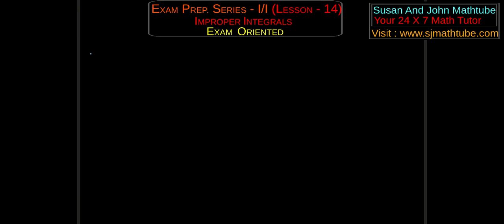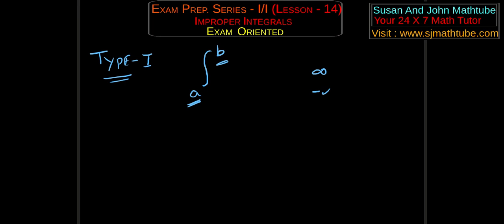Type 1 is something very obvious. Type 1 means the limits — if the integral is in the form a to b, then one of a or b will be infinity or minus infinity, or both. It can be from minus infinity to infinity also. So type 1 improper integral means one of the limits will be plus or minus infinity.